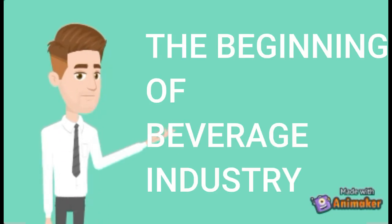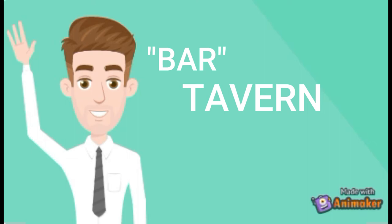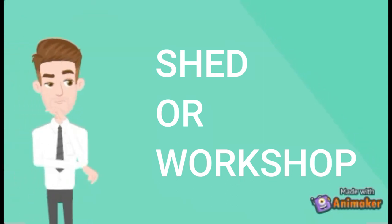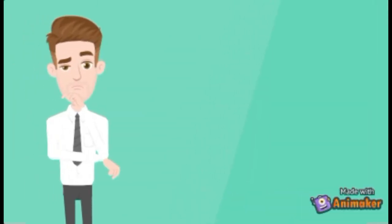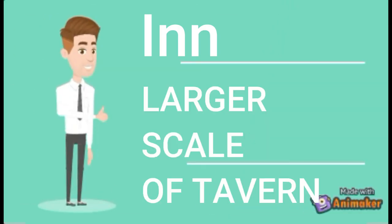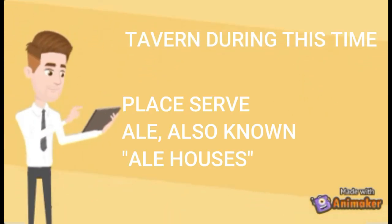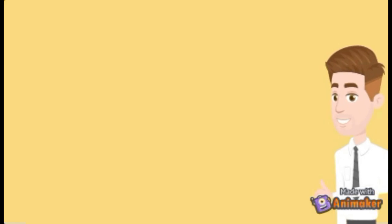The Beginning of the Beverage Industry. Because of the abundant supply of fermented cereal grain, some sold the product to others who didn't have the capacity to produce it for their own consumption. This is the beginning of the establishment of the forerunner of today's bar, known before as a tavern — from the Latin word taverna and from the Greek word taverna, which originally means a shed or workshop. A tavern is a place of business where people gather to drink alcoholic beverages and be served food, and mostly historically where travelers would receive lodging. An inn is a larger scale of a tavern; it has a license to put up guests as lodgers.